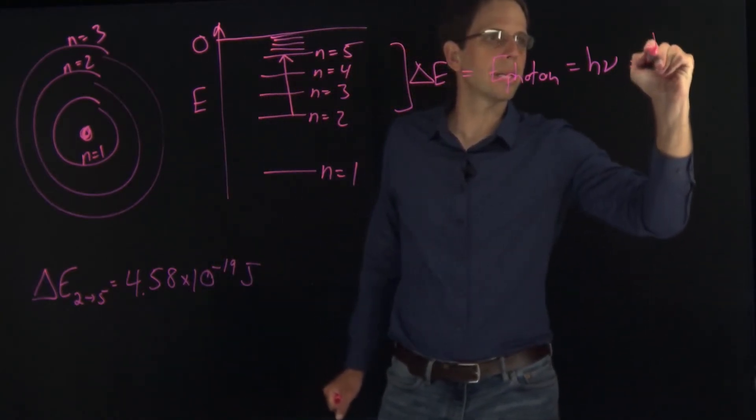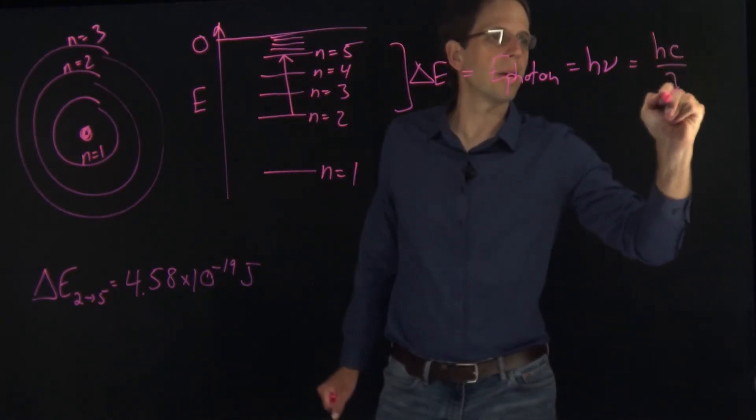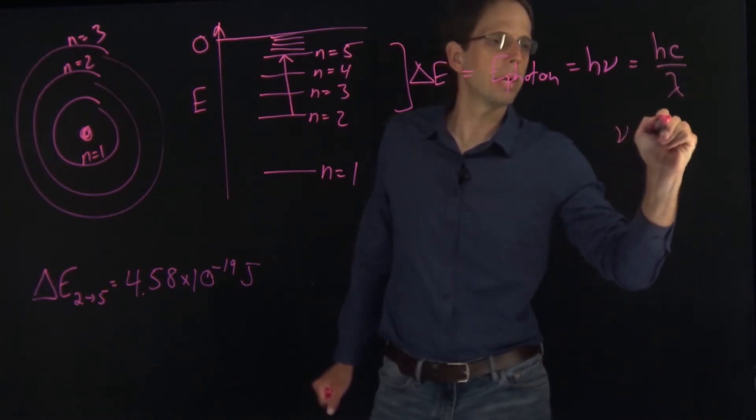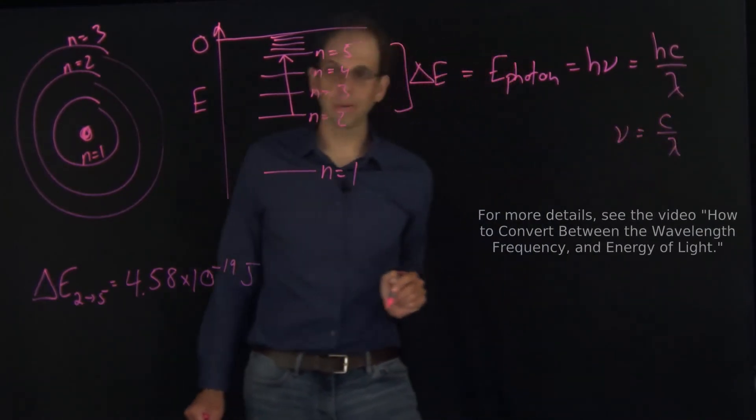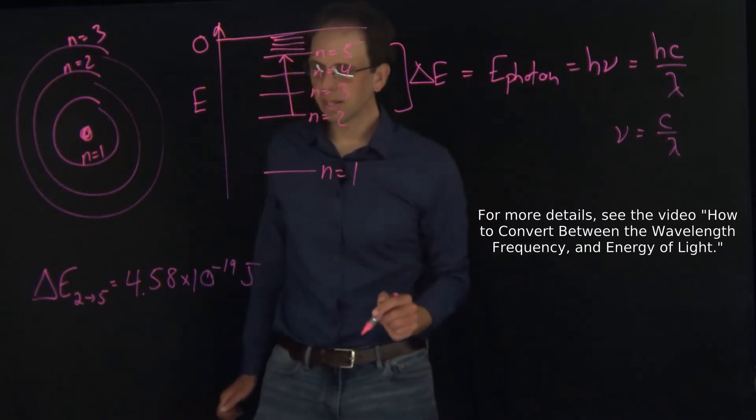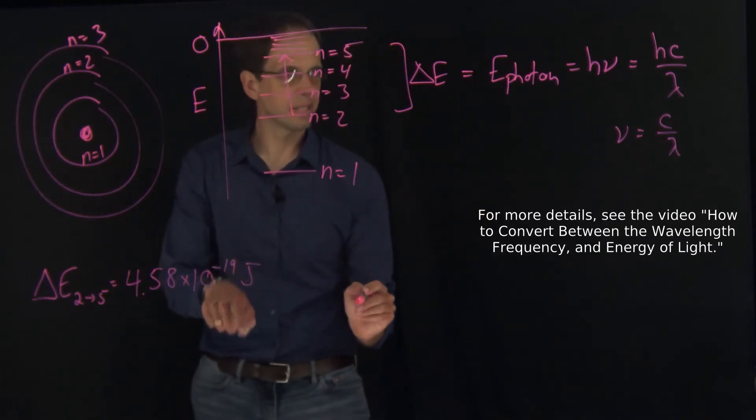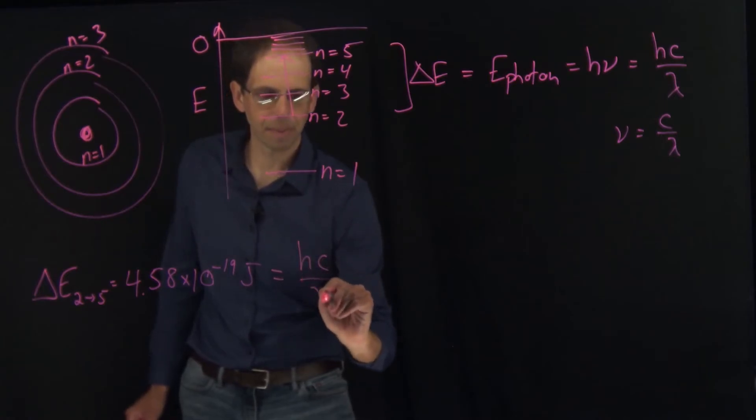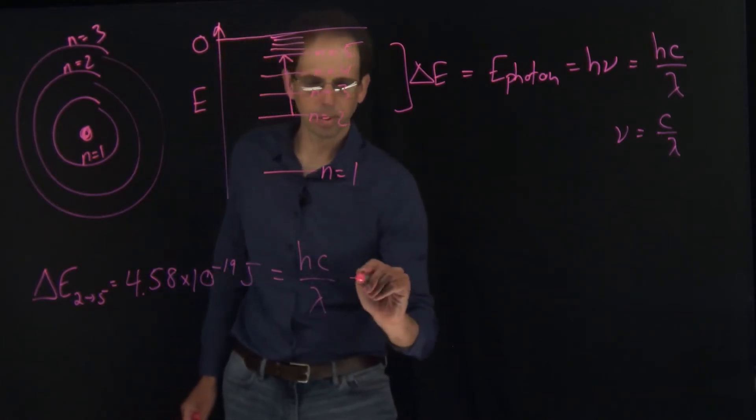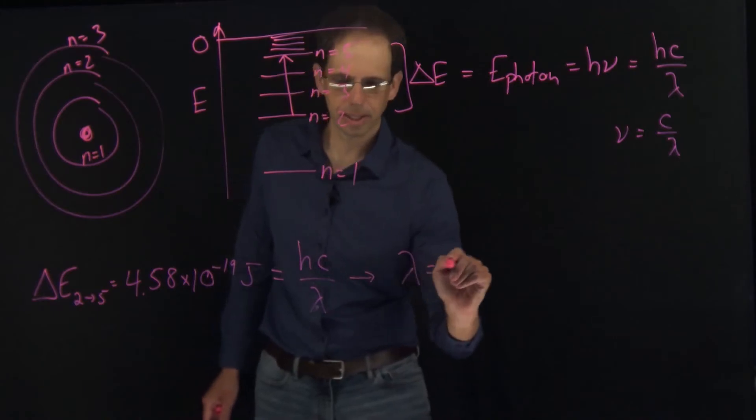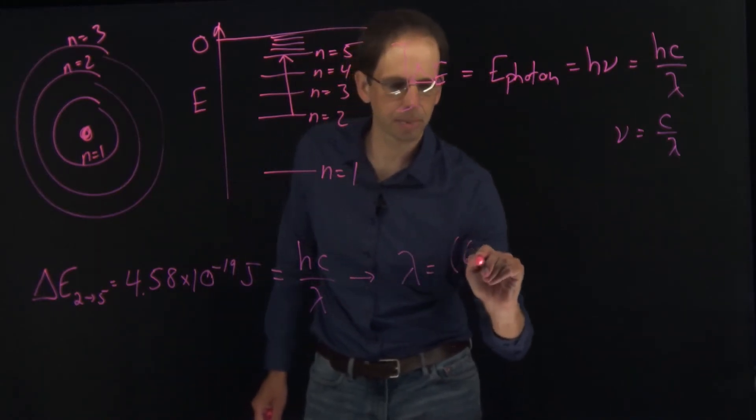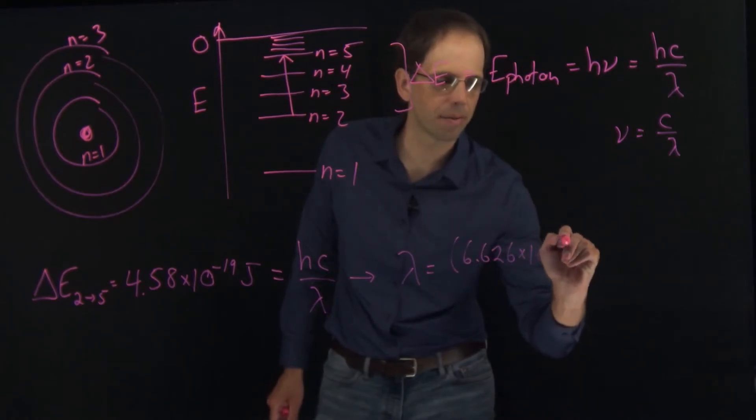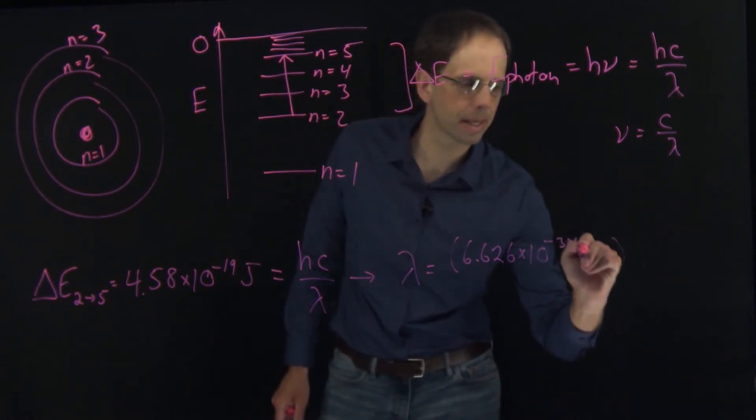This amount of energy needs to equal H C over lambda, or in other words, lambda is going to be equal to H, which is 6.626 times 10 to the minus 34 joules times seconds, times the speed of light, 2.998 times 10 to the eighth meters per second.